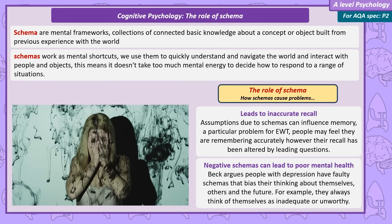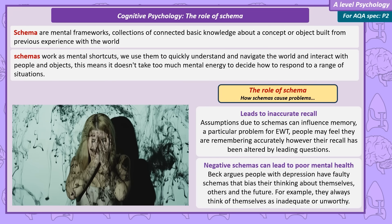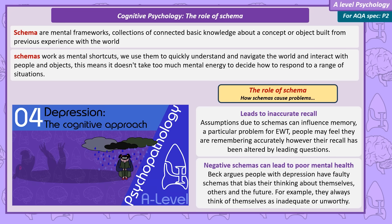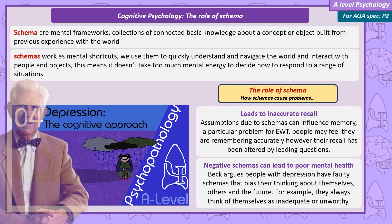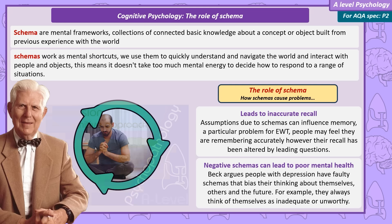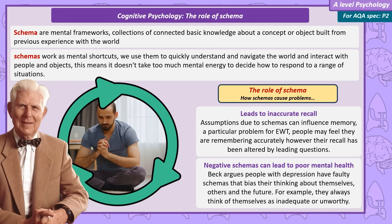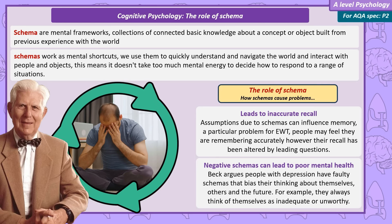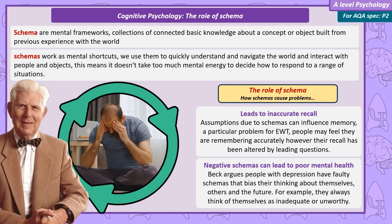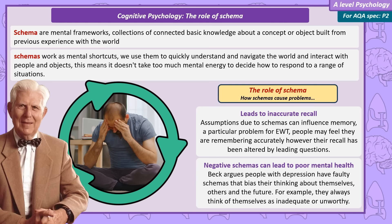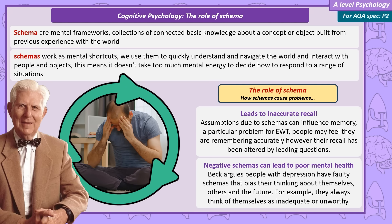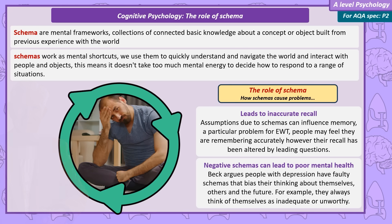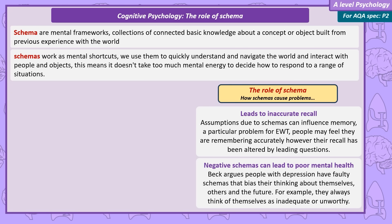But schemas can also lead to mental health issues — an issue we'll cover in more detail when discussing the cognitive approach to depression. According to Beck, people with depression have a negative triad of schemas that bias their thinking. These three include negative beliefs about themselves, called self-schemas, such as always seeing themselves as inadequate or unworthy; negative schemas about the world, seeing it as hostile and threatening; and negative schemas about the future, assuming that things will always turn out badly.